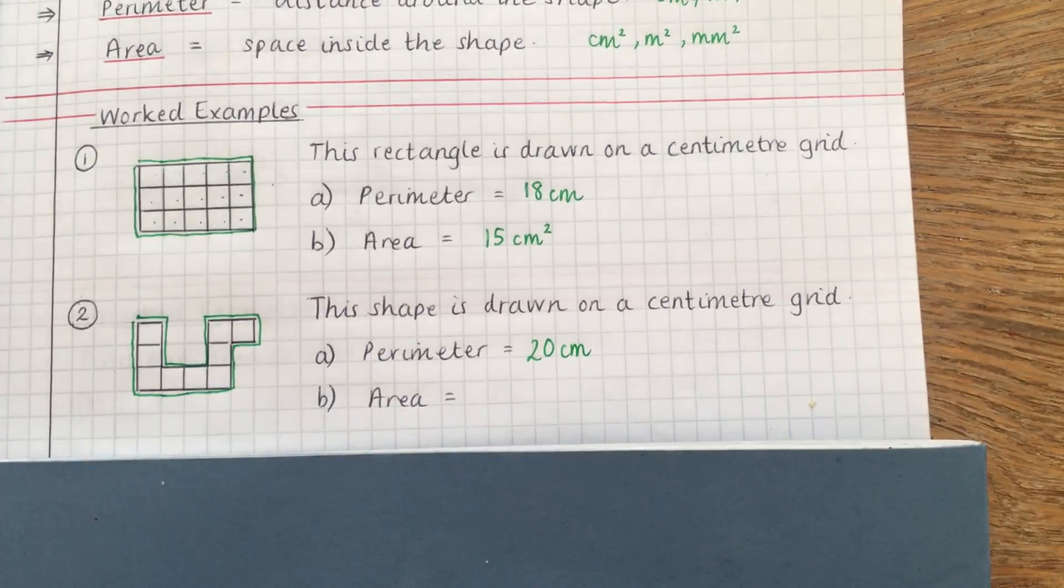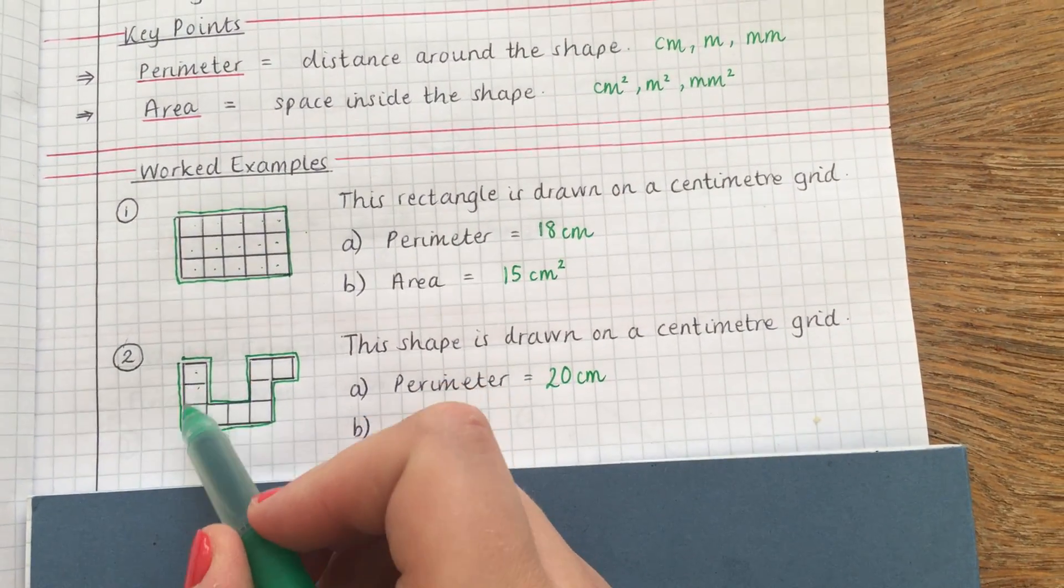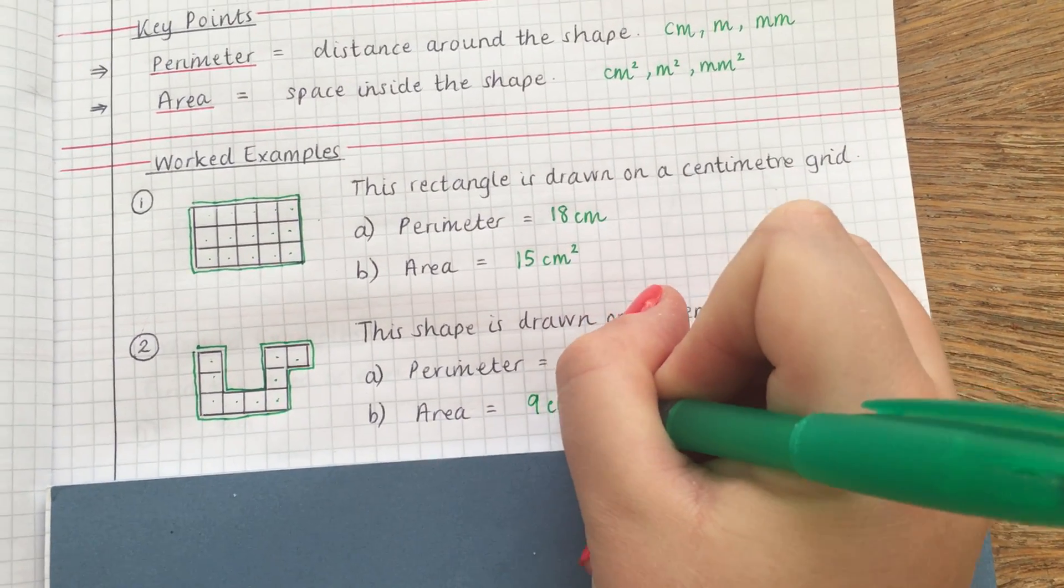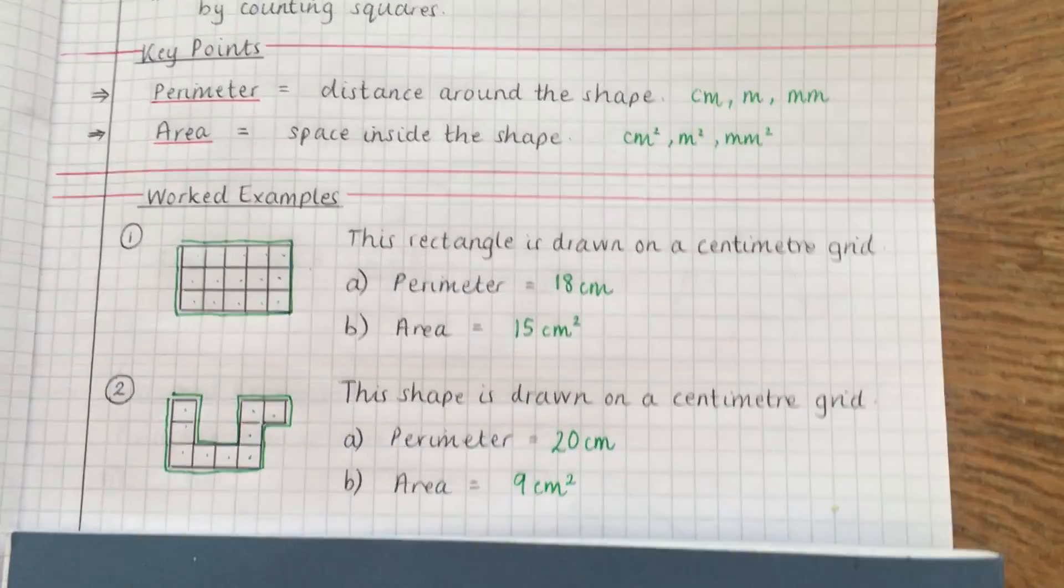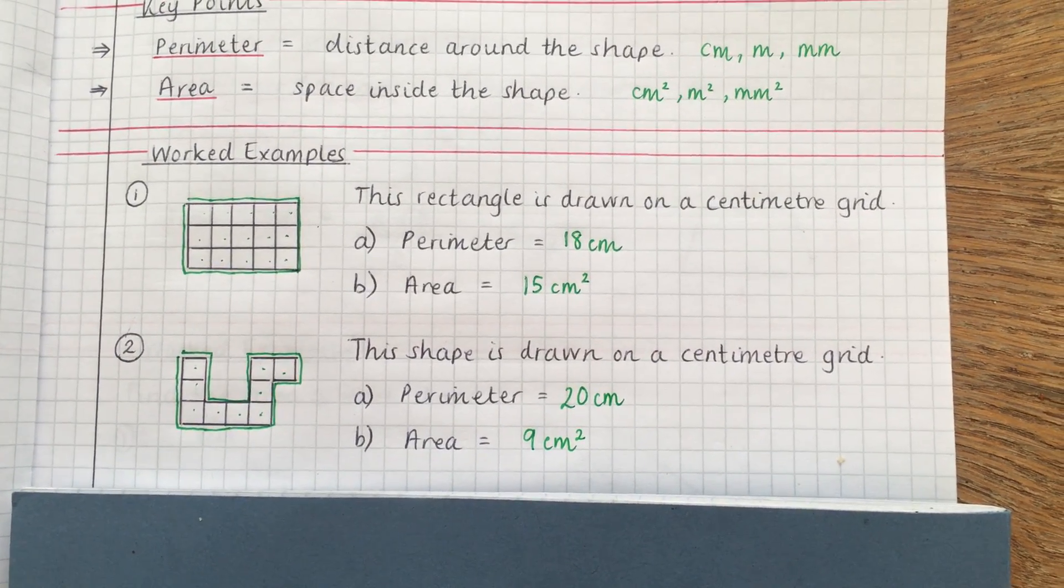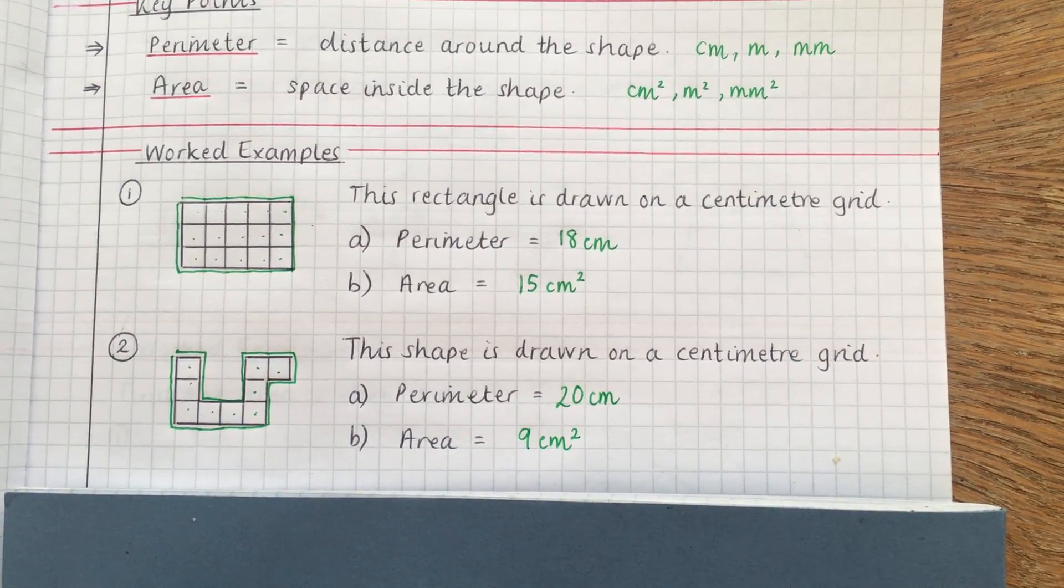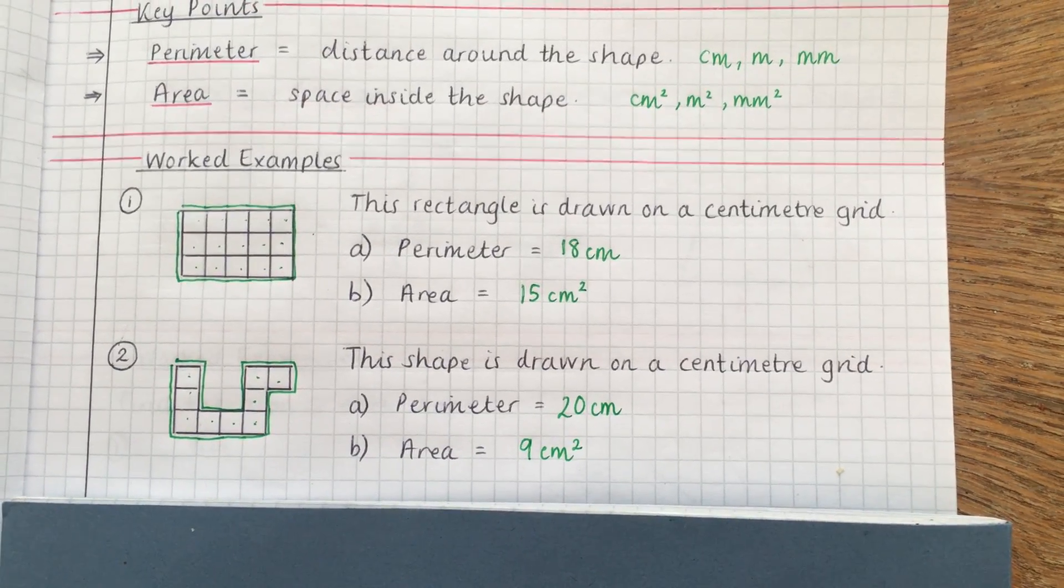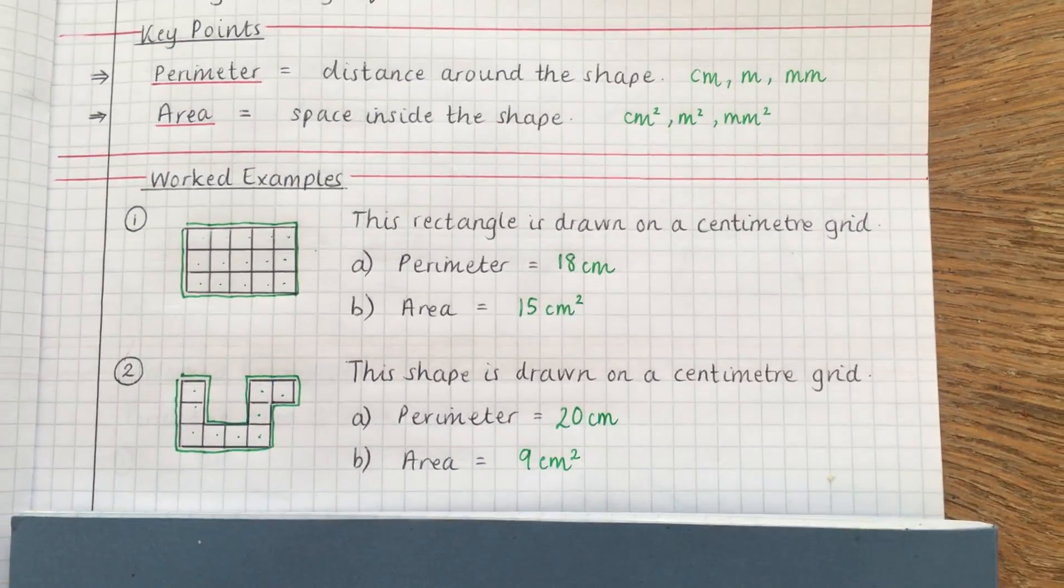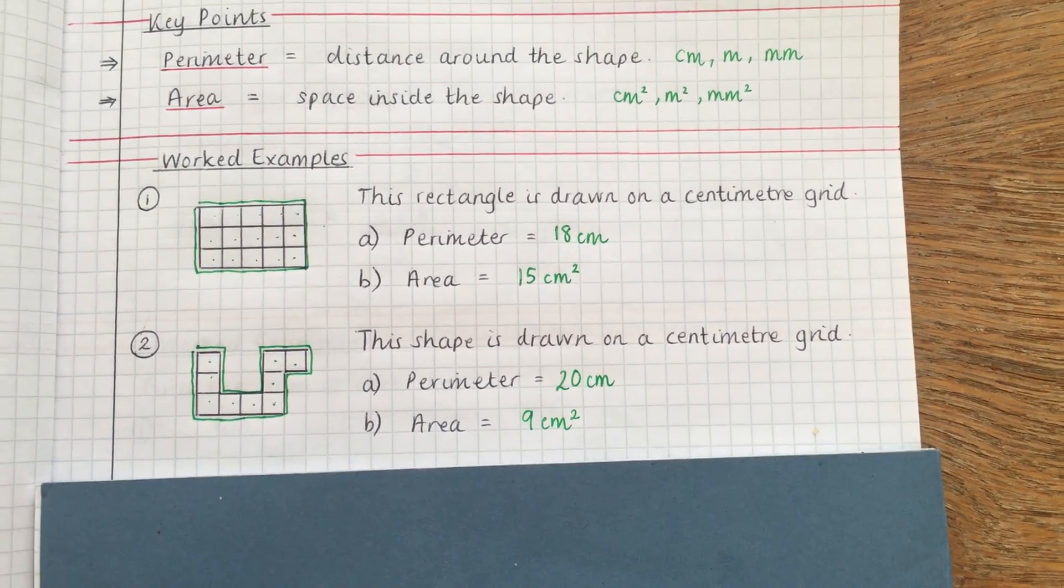So moving on to the area then, nice and easy, it is just counting the boxes: one, two, three, four, five, six, seven, eight, nine, and don't forget your units: centimeters squared. So it's a very simple concept but you need to be able to know the difference between perimeter and area. Make sure you memorize that, and these would be silly marks to lose in an exam, so make sure that you've got that sorted and just have a go at this question.